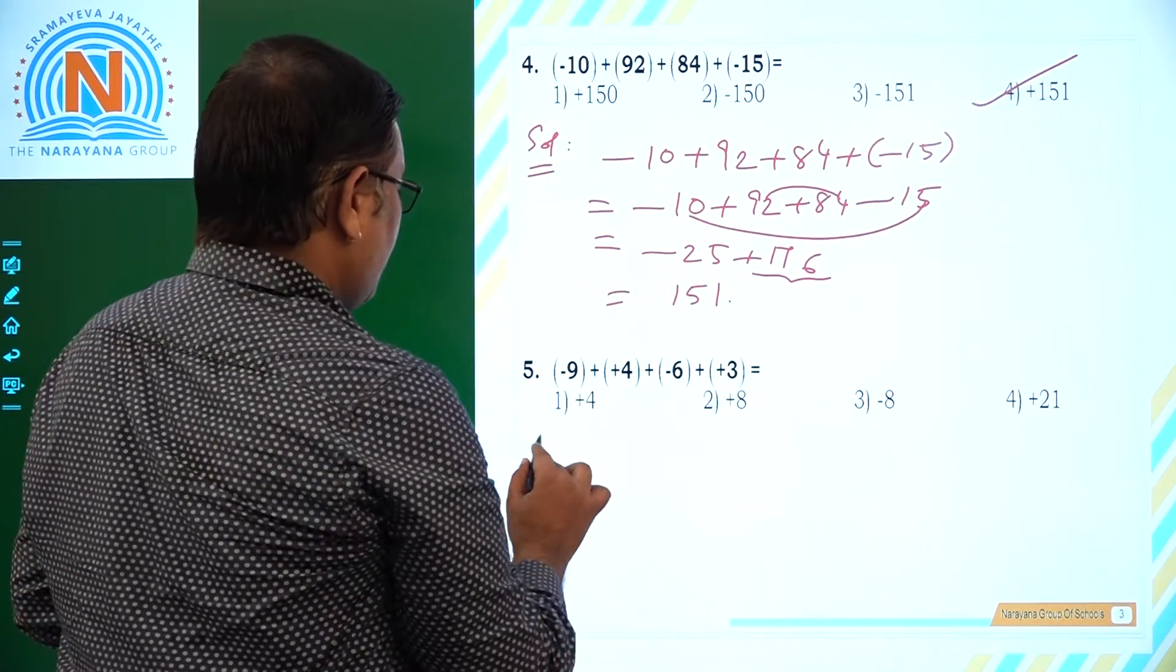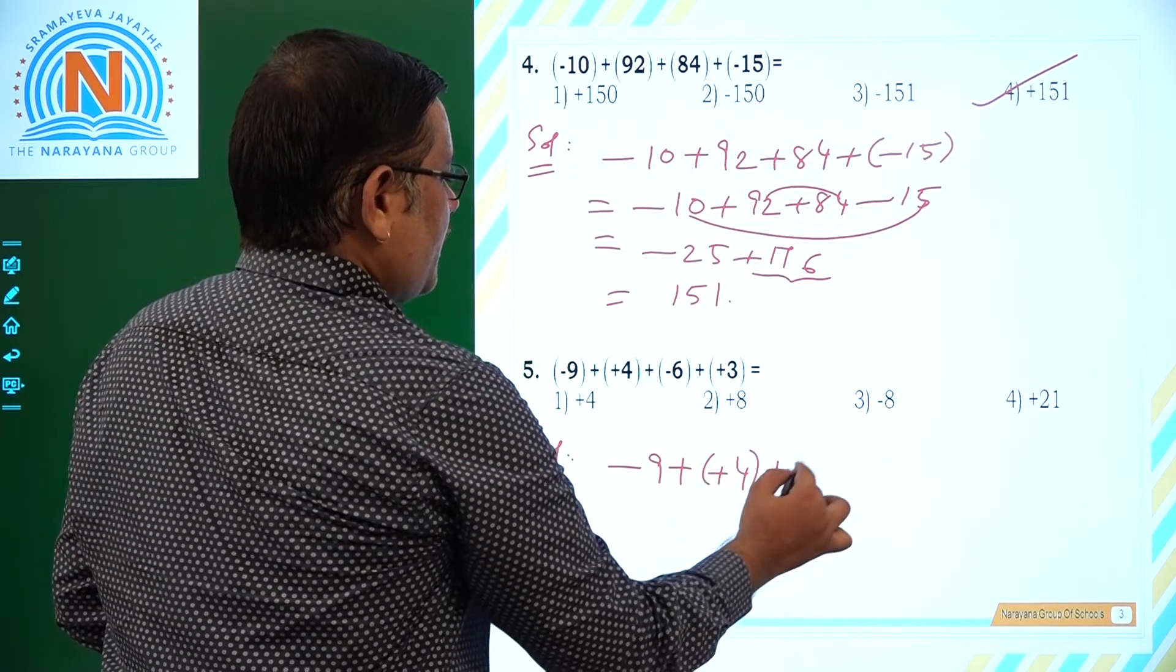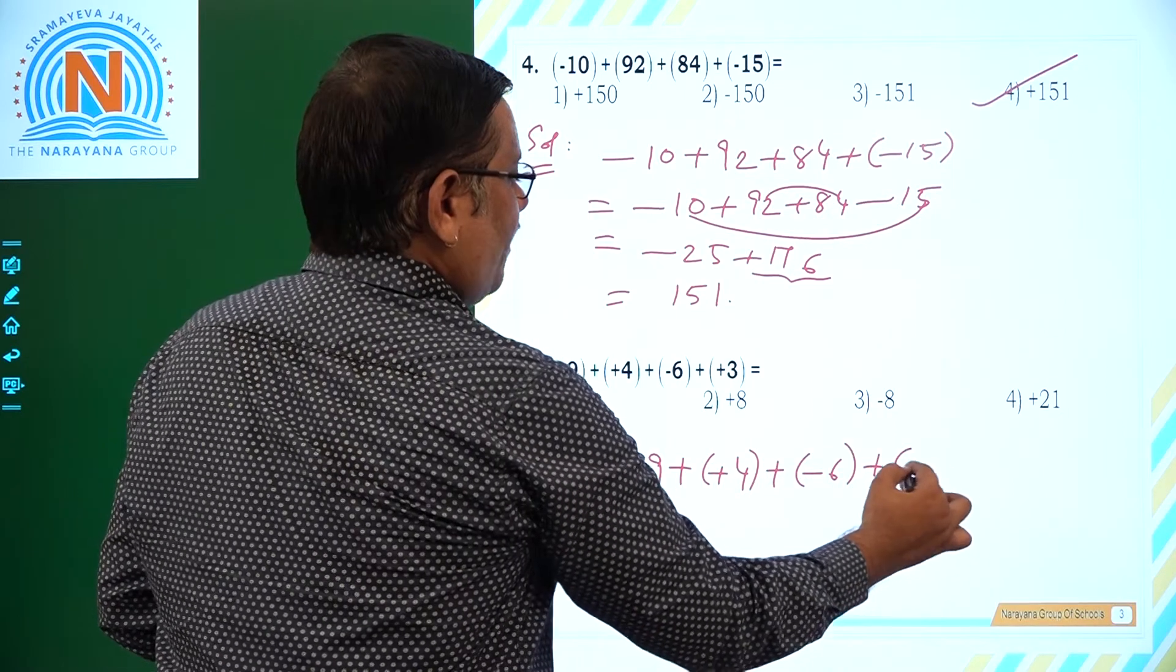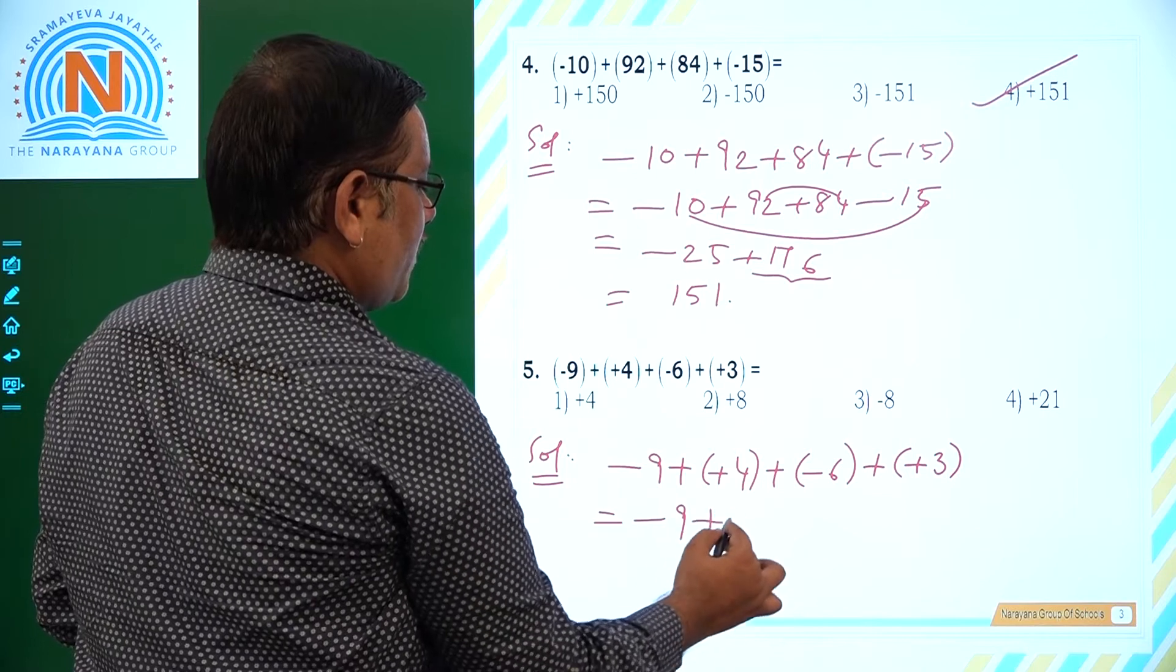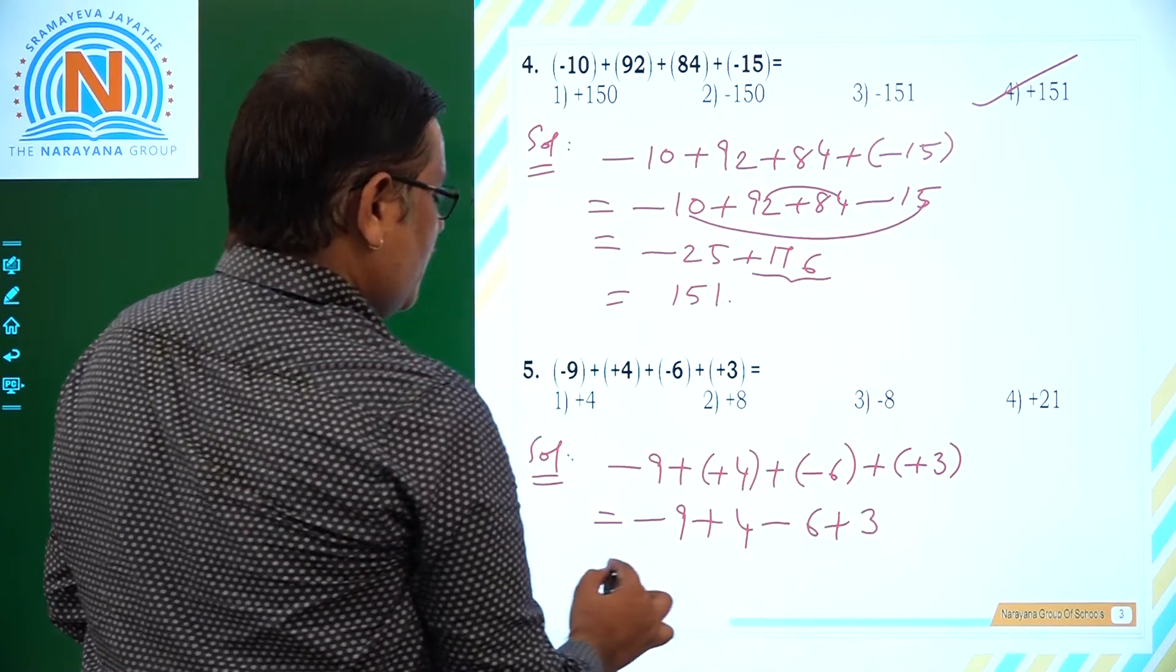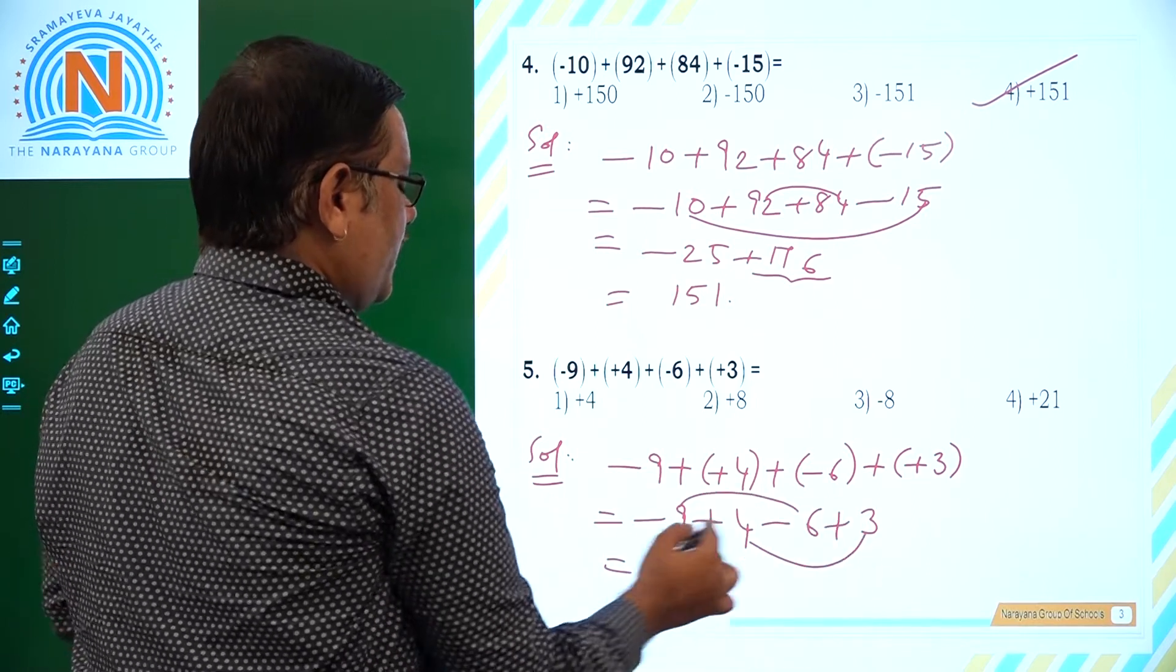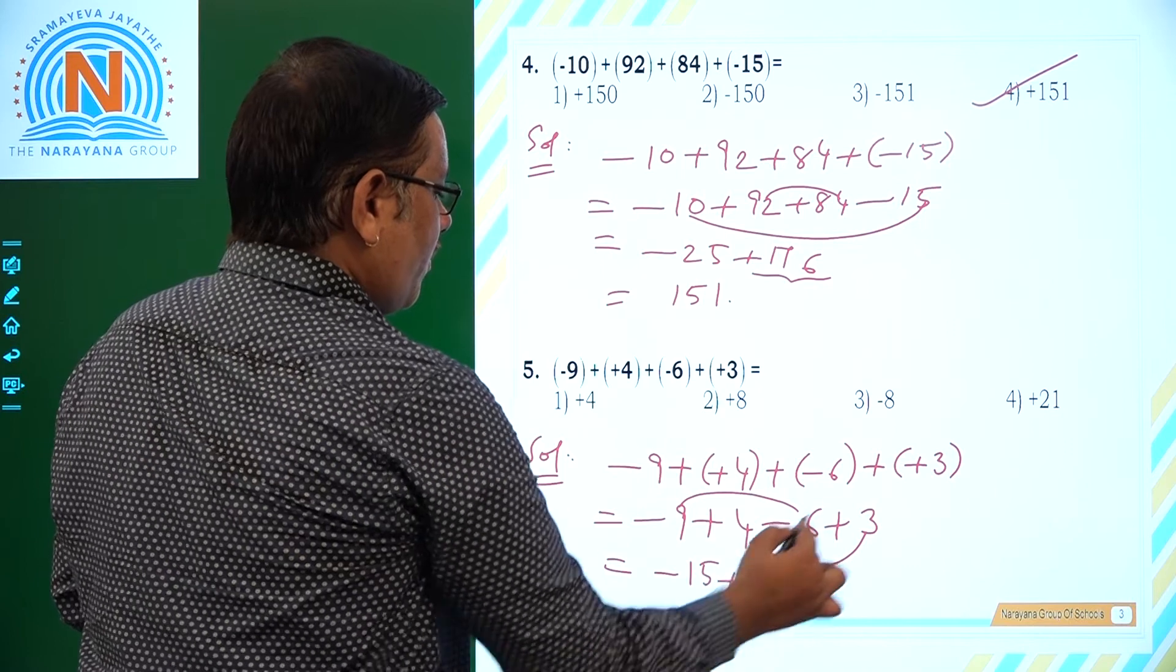Now, we will see the next question. -9 + (+4) + (-6) + (+3). So -9, let us write plus, plus means plus, plus half minus is minus, plus half plus is plus. So here 2 minus signs, 2 plus signs. -9 - 6, that is -15. +4 + 3 is 7.